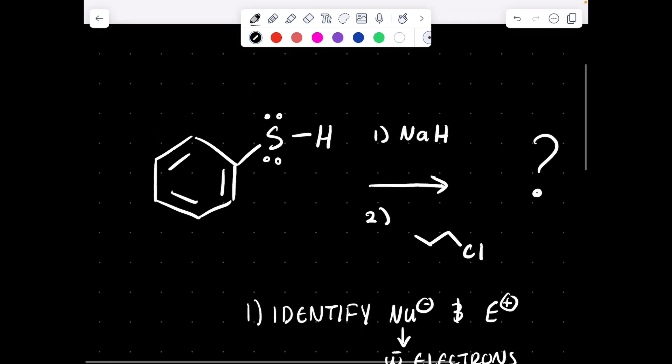So, here on the left hand side, I have a compound. Where are the pi bonds? Where are the lone pairs? A really good habit to get into is always highlighting all the lone pairs and all the electrons in the pi bonds that could participate in the reaction. So, then I'm going to go to my reagent and say, okay,